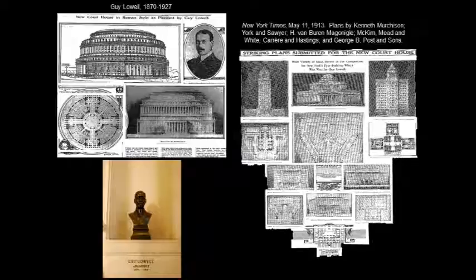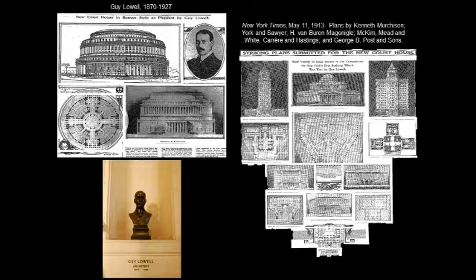As Bob has said, Guy Lowell, a Boston architect, was a rather surprising victor in the competition. A great number of leading New York firms — York and Sawyer, Van Buren, McGonigal, McKim Mead and White, Carrere and Hastings — they lose out to this guy from Boston, Guy Lowell, and in particular his rather unusual proposal for a round building that was immediately compared to the Roman Coliseum. On the bottom you see the bust of Lowell that is there in 60 Centre Street.